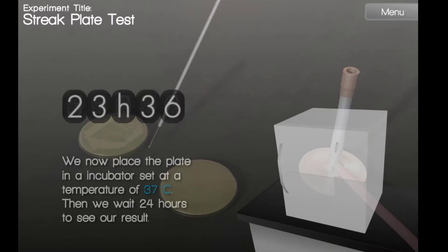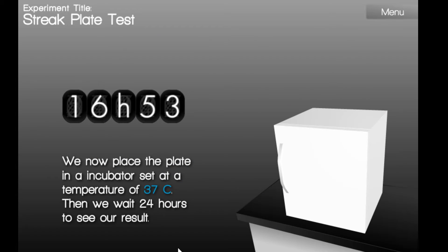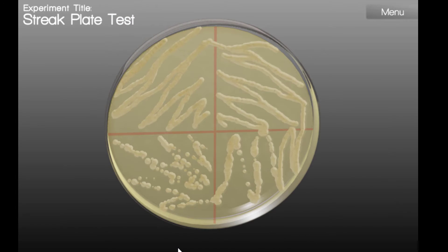Now we're going to place the agar plate into an incubator. The fourth quadrant is usually where you will find the isolated colonies. This is because with each successive quadrant, the inoculum was further diluted.